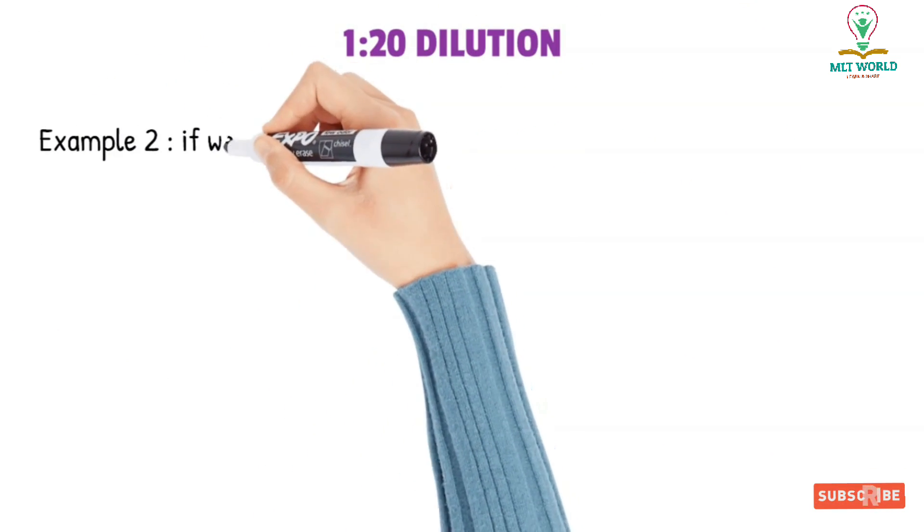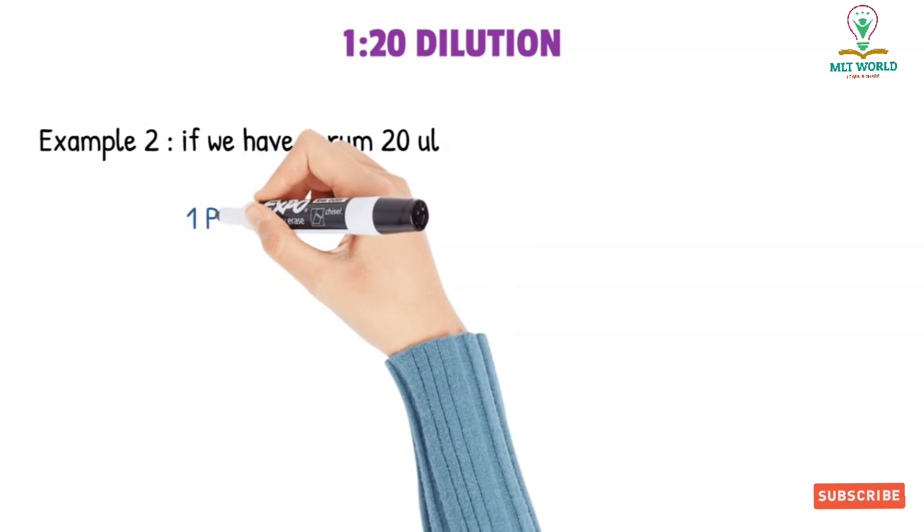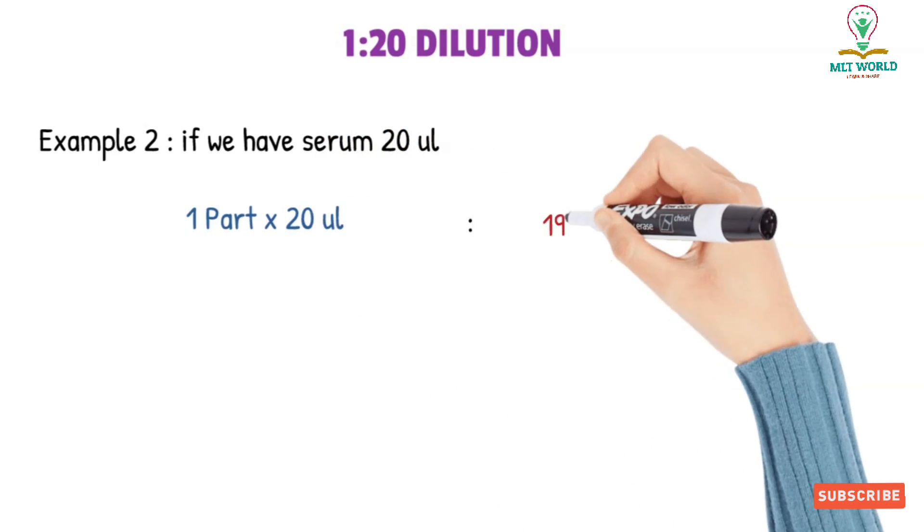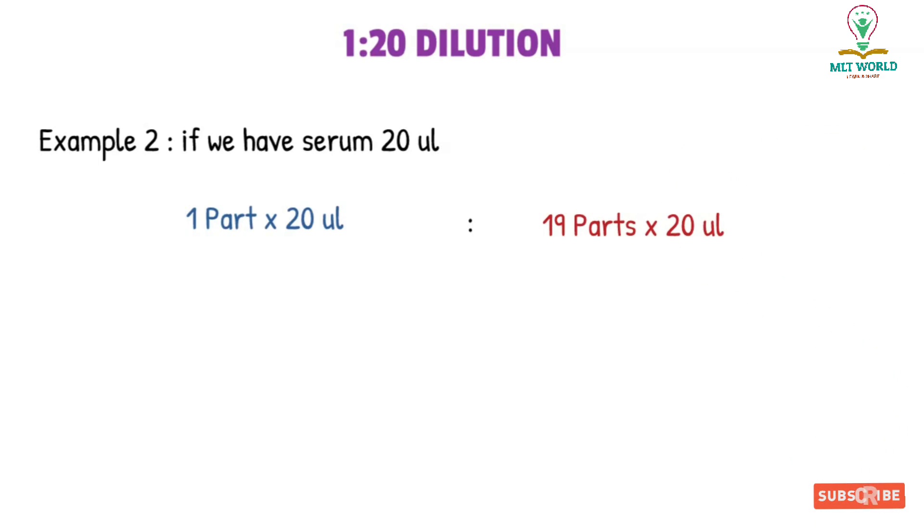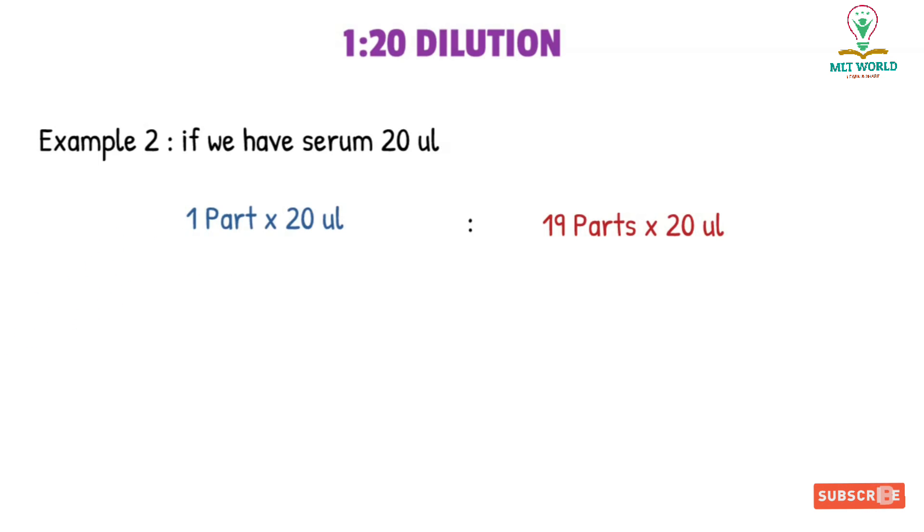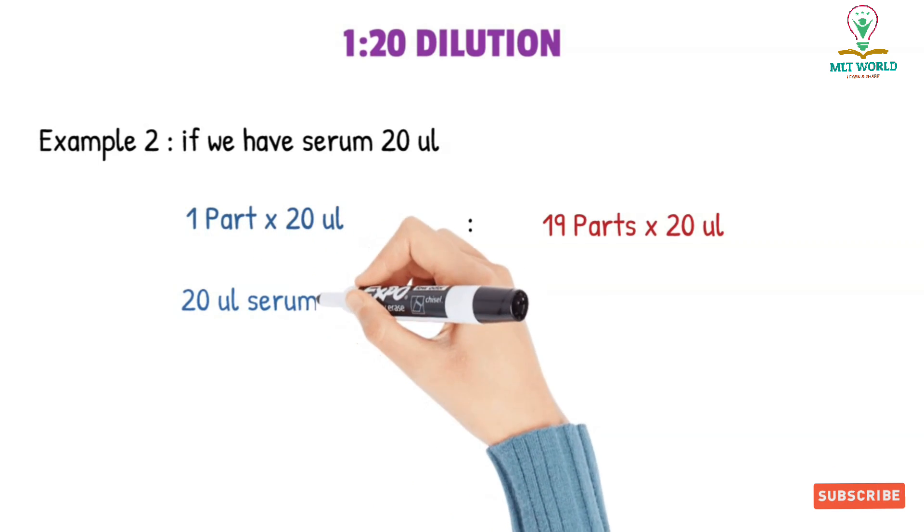Now in the second example, for example, if our serum quantity is a little more, that it is 20 microliter, then how much dilution? Same, one part will be multiplied by 20, and 19 parts also will be multiplied by 20 microliter. Now you focus. Now our sample will be how much? One multiply by 20. And our reagent? It will be 19 multiplied by 20. So it will be 20 microliter serum we need and 380 microliter reagent or distilled water, whatever solution we are using to dilute the sample.